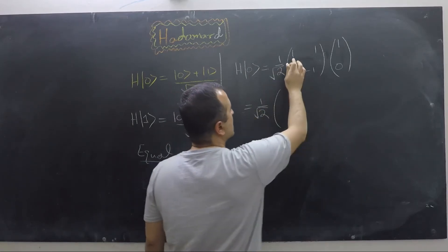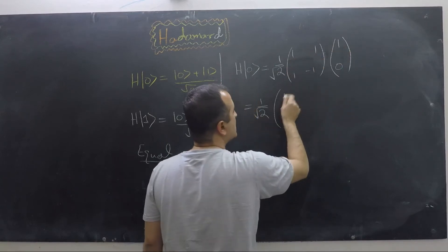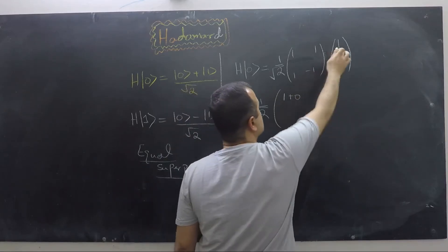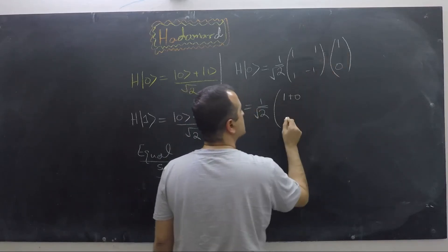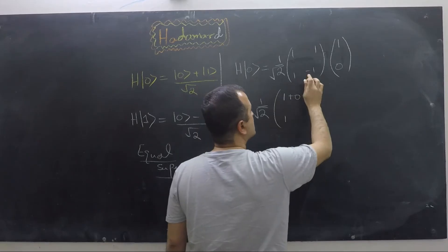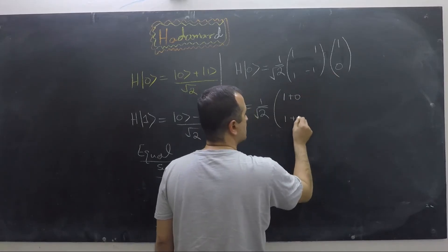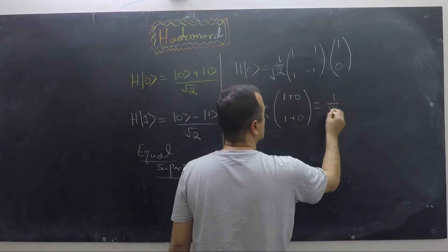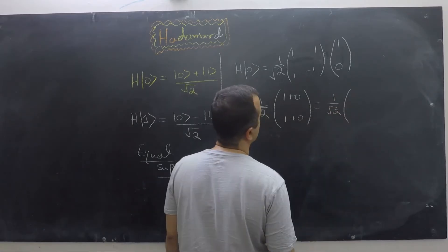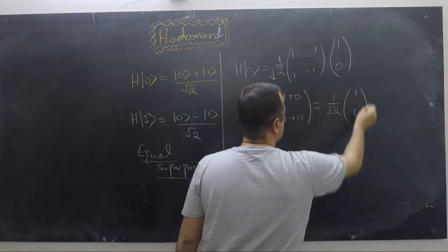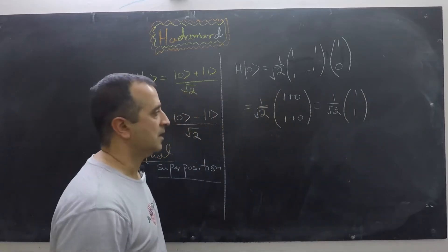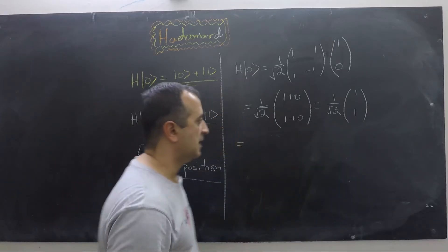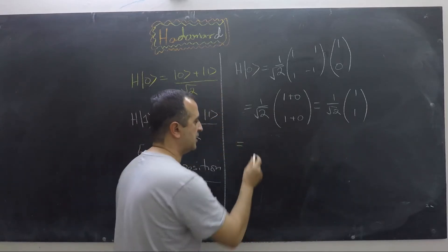We get 1×1 = 1 and 1×0 = 0 for the first row. Then we multiply the second row: 1×1 = 1 and (−1)×0 = 0. After simplifying, we get 1 over square root of 2 times the vector (1, 1). Now we can write this result as two separate vectors.